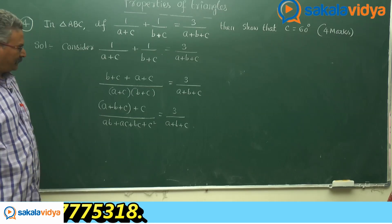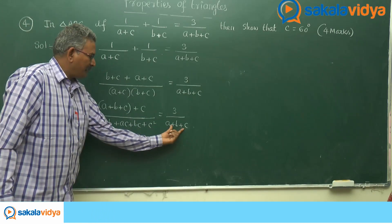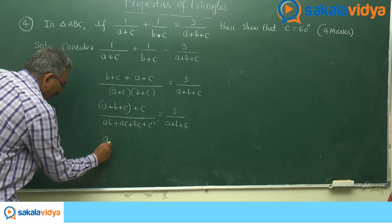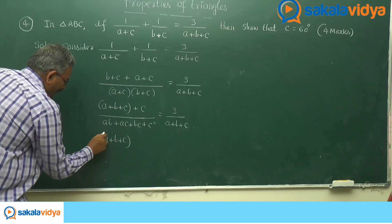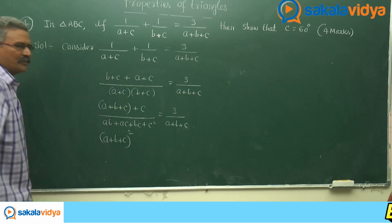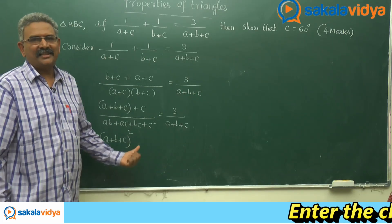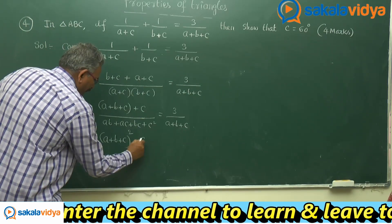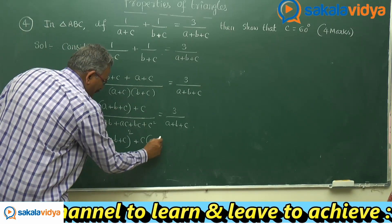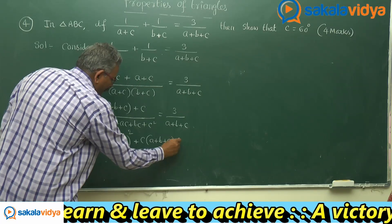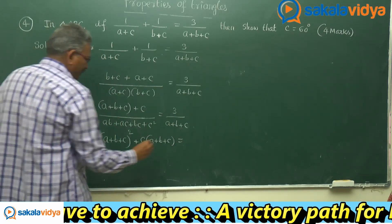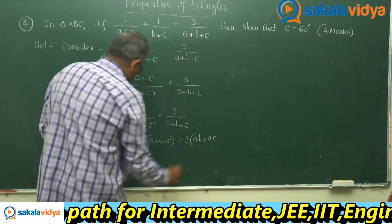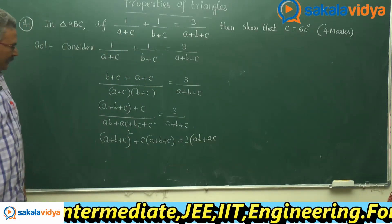Cross multiplication takes place. That means A plus B plus C multiplied by A plus B plus C — we get A plus B plus C whole square. This is nothing but the standard identity: A square plus B square plus C square plus 2AB plus 2BC plus 2CA, multiplied by C, equals 3 times AB plus AC plus BC plus C square.